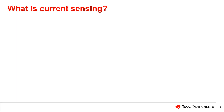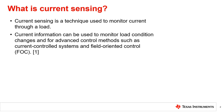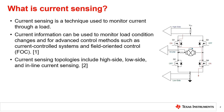Let's begin by discussing what exactly is current sensing. Current sensing is any technique that is used to monitor and measure the current through a load. In brushed and stepper motor applications, this current regulation can be used to monitor load condition changes and for regulating the motor winding current. Typical current sensing topologies include high-side, low-side, and in-line current sensing. All of these topologies use a shunt resistor, which generates a small voltage drop proportional to the current flowing through the resistor.